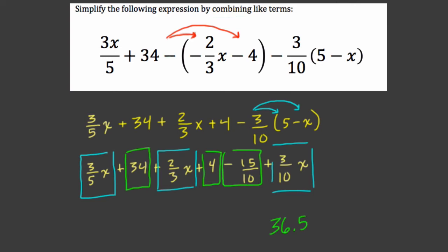And the x terms might throw you off a little bit because of the fractions and the variables. But really, we can use our knowledge of adding fractions to deal with adding these three terms. So we can think of this as 3 fifths plus 2 thirds, I'm just adding the coefficients, plus 3 tenths, times x. And we're going to add 36.5 to that.